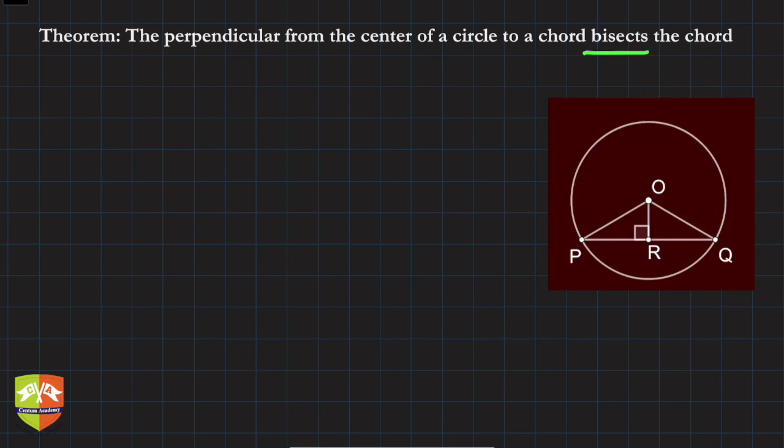Now let's prove it. What's given? It is given that OR is perpendicular to PQ, and O is the center of the circle.